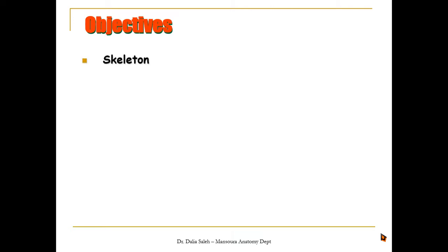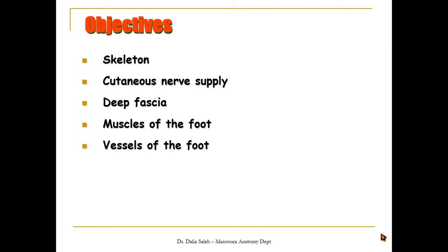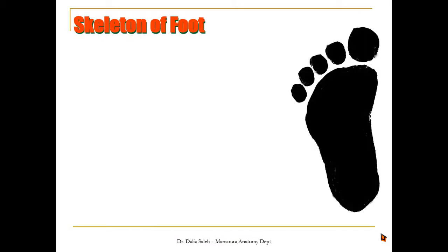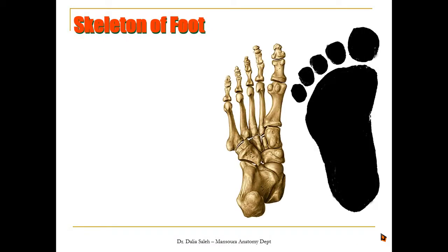For the anatomy of the foot we need to cover the following objectives: first we will revise the skeleton of the foot, the cutaneous nerve supply, the deep fascia and how it is arranged, the muscles, the vessels, and the nerves of the foot.